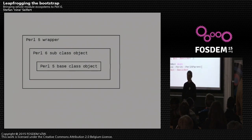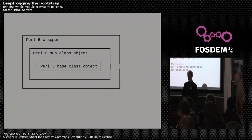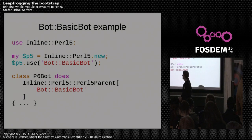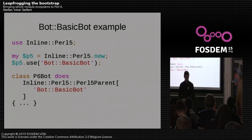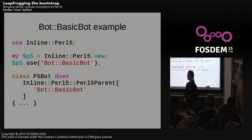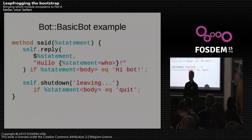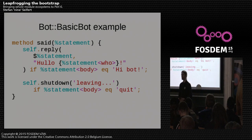With this, you can use for example Bot::BasicBot, which requires you to subclass it to implement its behavior. We just use Inline::Perl5, load the Bot::BasicBot module, and have our Perl 6 bot class consume the Perl5::Parent role and specify the base class. Then we implement methods like the 'said' method that gets called whenever someone says something on the IRC channel, where we implement the bot's behavior — greeting back when greeted, and quitting when asked to leave.